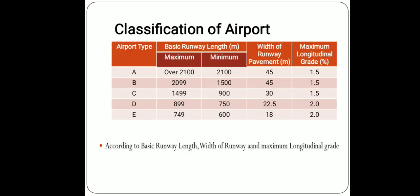The next classification is based on basic runway length, width of runway and maximum longitudinal grade. Airports are classified into 5 types: A, B, C, D and E. For type A, the basic runway length is a minimum of 2100 m, the width of runway pavement is 45 m, and the maximum longitudinal grade is 1.5%.